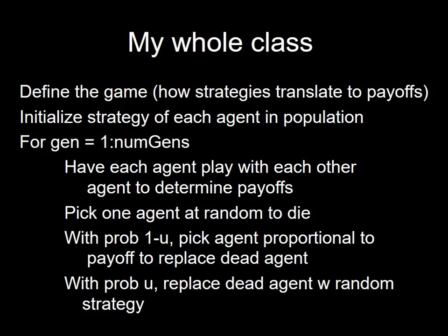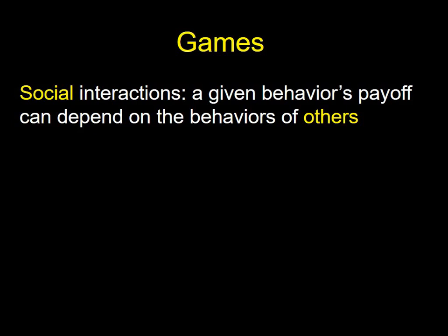All the art and science is in the 'define the game' step, because once the game is defined it's straightforward to see what strategy wins. This framework is simple and infinitely flexible — you can put whatever you want in the define-the-game step. It's an engine that says: assuming agents reproduce proportional to fitness, what's going to happen?